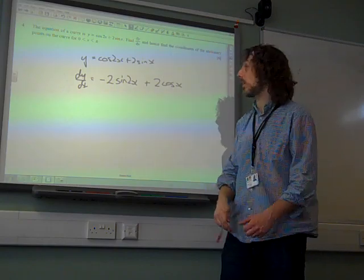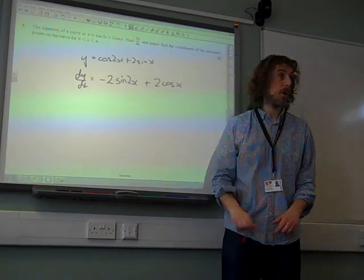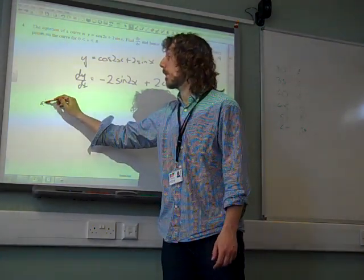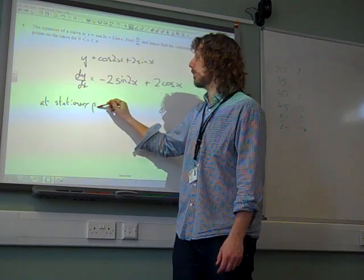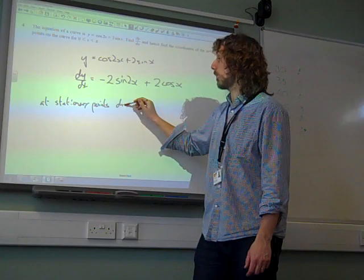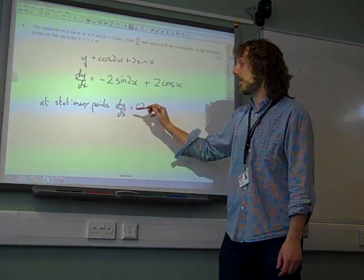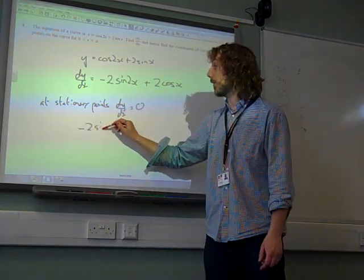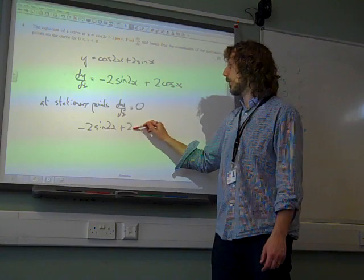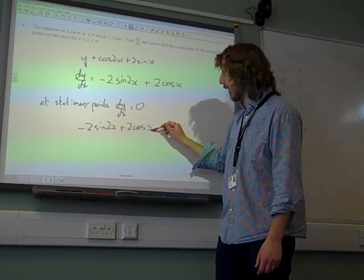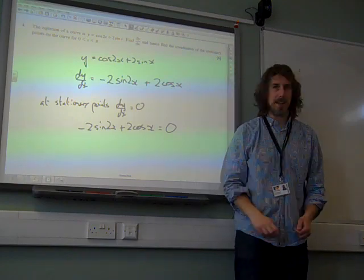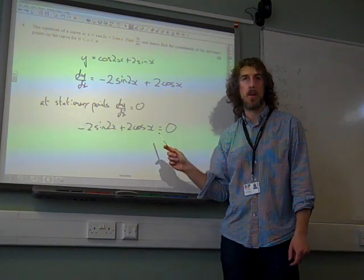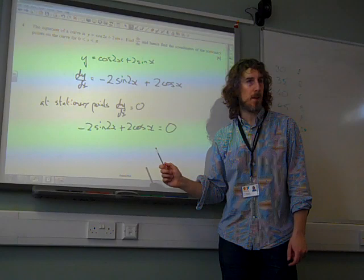And hence finding the problems of the stationary points. So at stationary points, we're looking for where dy by dx is 0. Which means minus 2 sine 2x plus 2 cos x is 0. We have an issue with this equation, and that is that it's 2x and x. We need to get it in terms of the same thing.